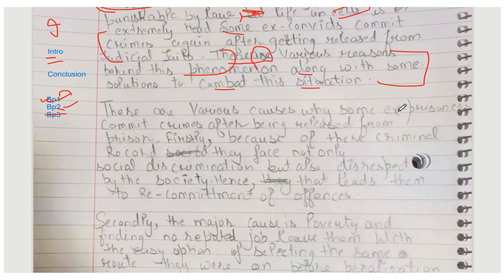There are various causes why some ex-prisoners commit crime after being released from prison. Firstly, because of their criminal record — note: 'their' meaning 'belonging to them' should be spelled T-H-E-I-R, not T-H-E-R-E. They face not only social discrimination but also disrespect by society. Hence that leads them to recommitment of offences — 'recommitment' should be lowercase 'r'.